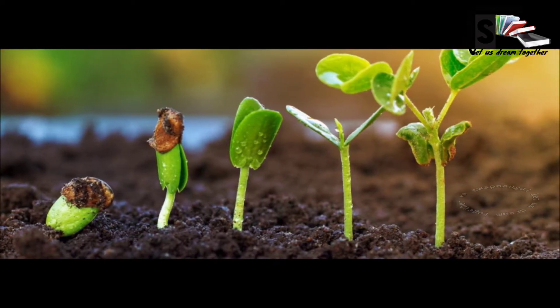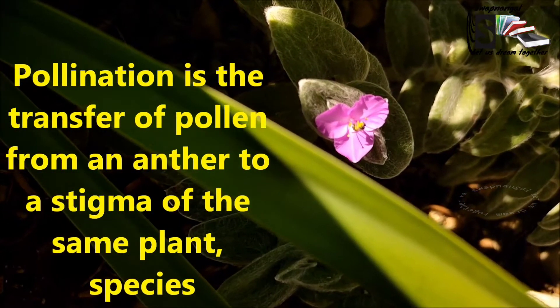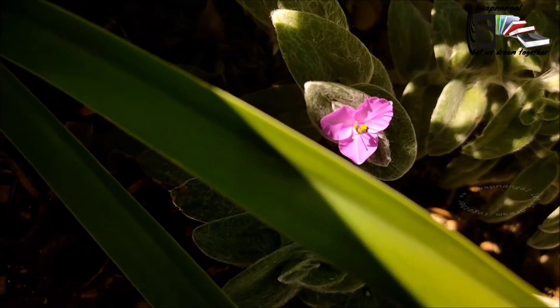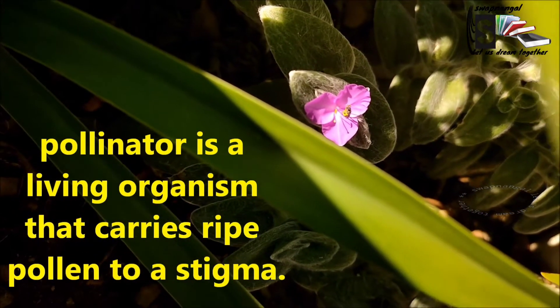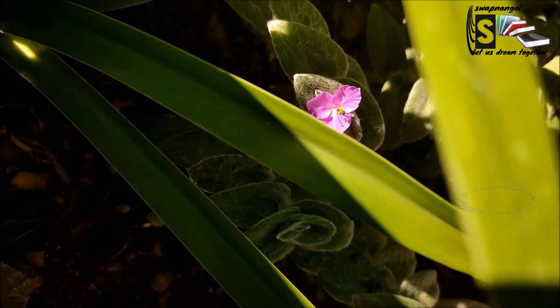New plants grow from seeds. Seeds can only form and develop in a flower if the flower has been pollinated and fertilization has taken place. Pollination is the transfer of pollen from an anther to a stigma of the same plant species. Pollen can be spread by the wind or by pollinators. Examples of pollinators are insects, birds and mammals. Pollinators are living organisms that carry ripe pollen to a stigma. There are different kinds of pollination.